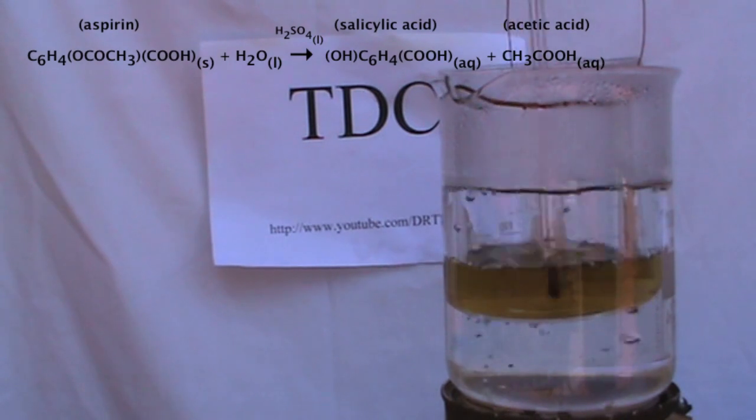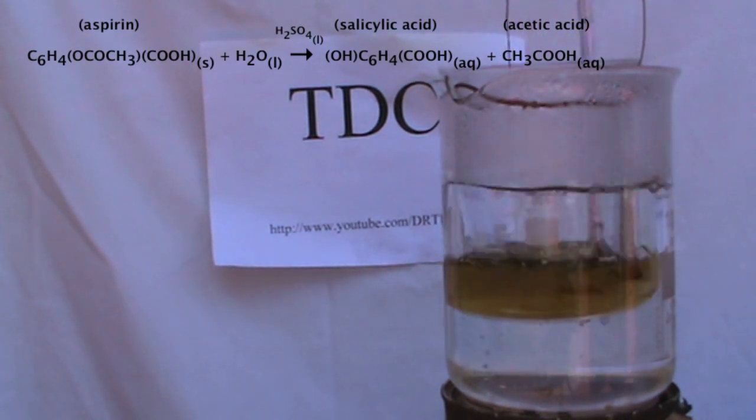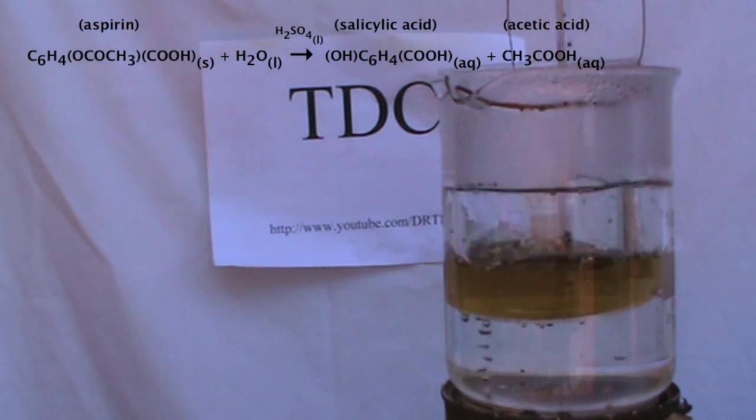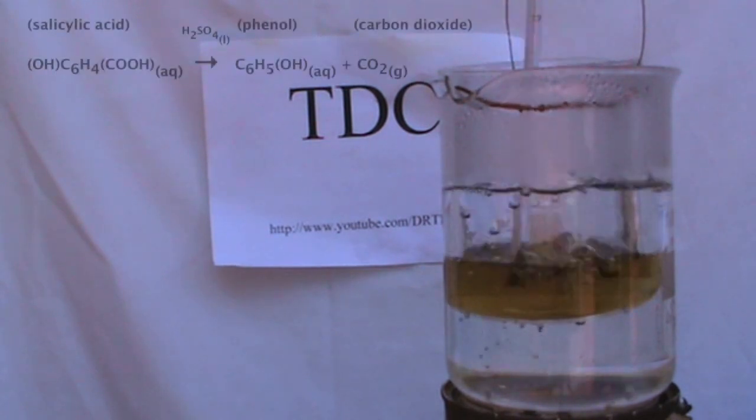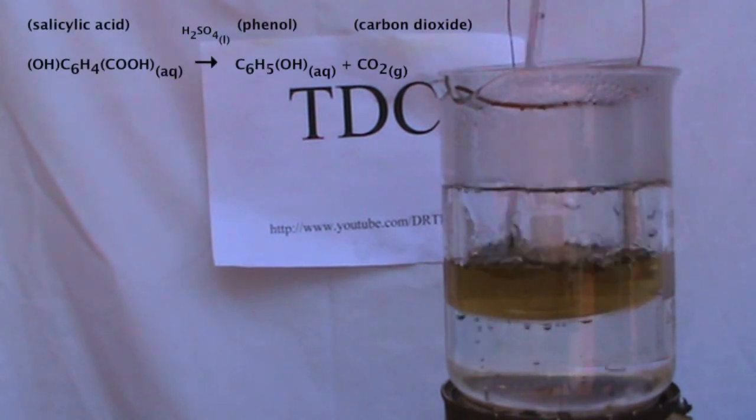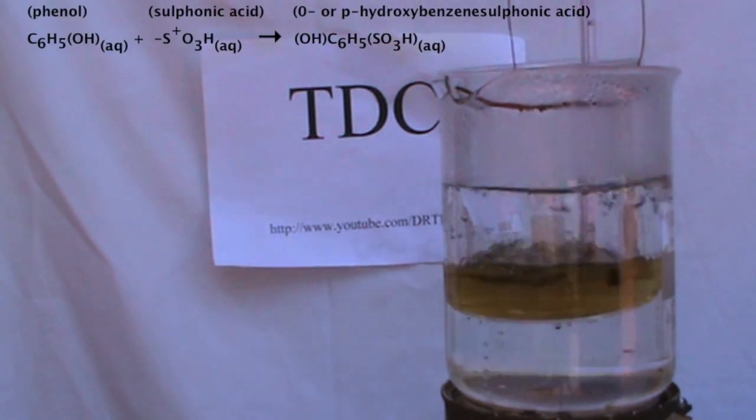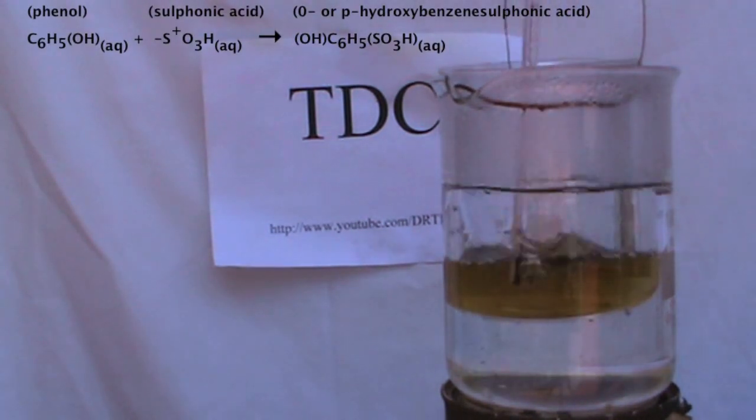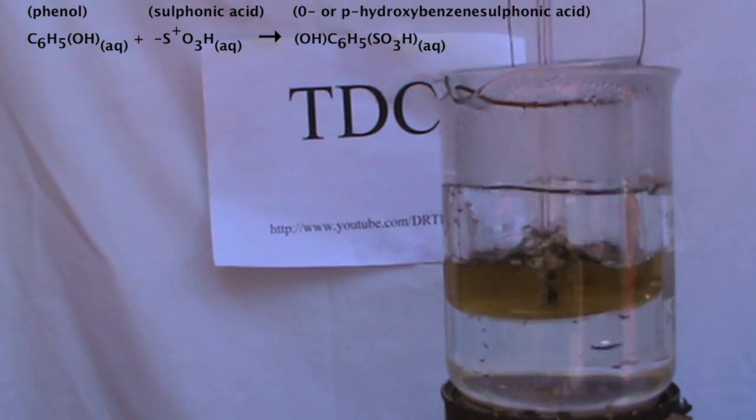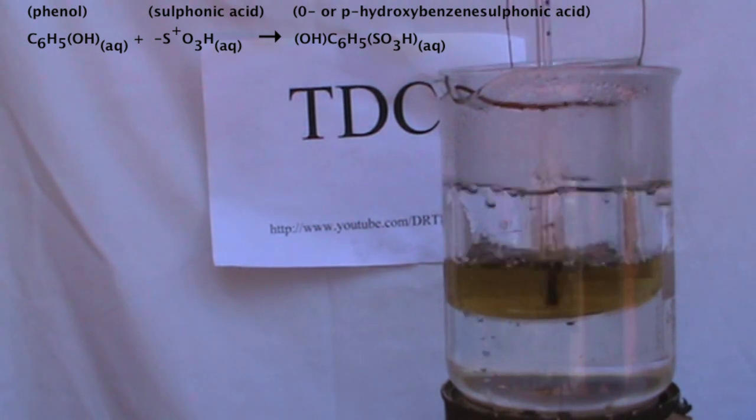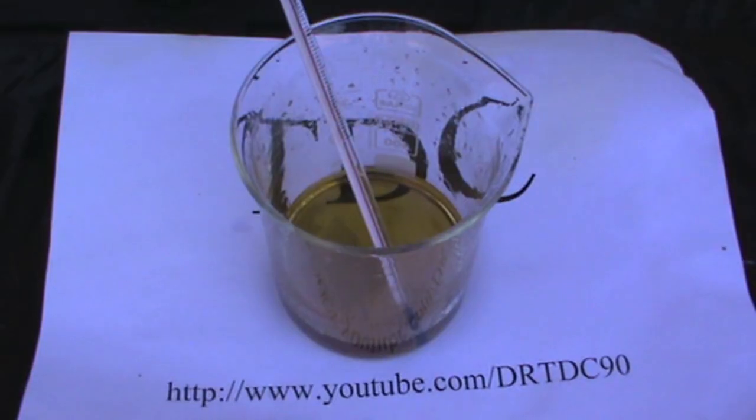In this step, the aspirin is hydrolyzed by the sulfuric acid to form salicylic acid and acetic acid. After that, the salicylic acid is decarboxylated to form phenol with the evolution of carbon dioxide gas. The sulfonic acid functional group produced from the sulfuric acid reacts with the phenol to form either the ortho or parahydroxybenzene sulfonic acid.